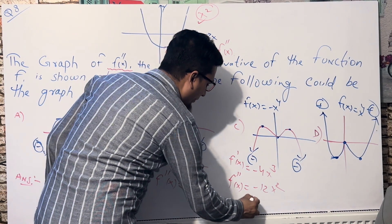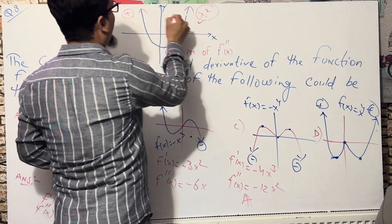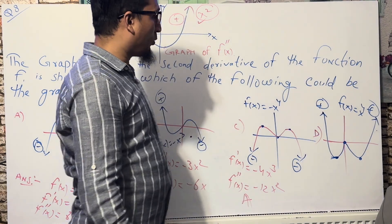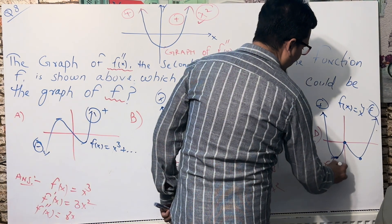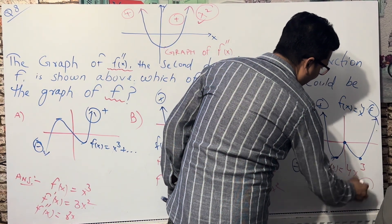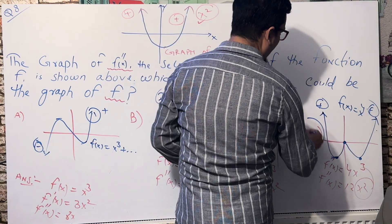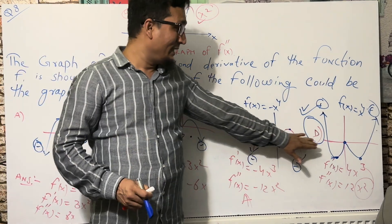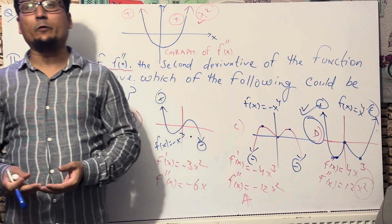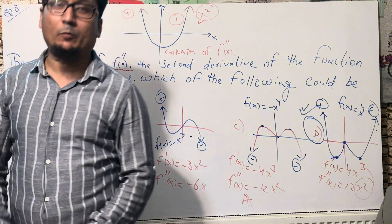The given double derivative graph has both ends going up, meaning we need positive x² - not negative. So option C (minus x⁴) gives minus x² for the double derivative, which is wrong. But for option D, F(x) = x⁴, the first derivative is 4x³ and the double derivative is 12x², which is a positive quadratic - matching the given graph. Therefore, answer D is correct!